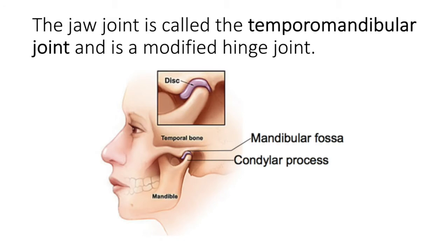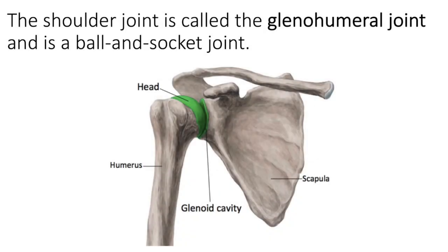Another important joint is the temporomandibular joint — your jaw joint. It is a modified hinge joint. Recall from our discussion that the jaw can do depression and elevation, protraction and retraction, and lateral excursion. Important components of this joint are the condylar processes of the mandible, those two posterior processes that insert into the mandibular fossa of the temporal bone.